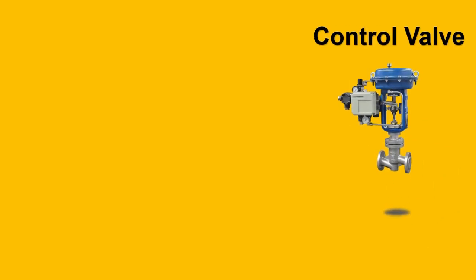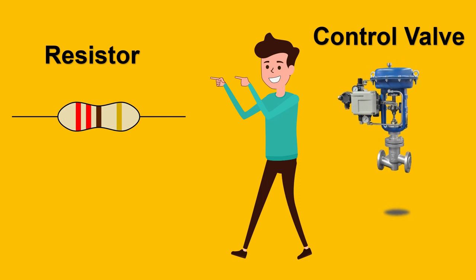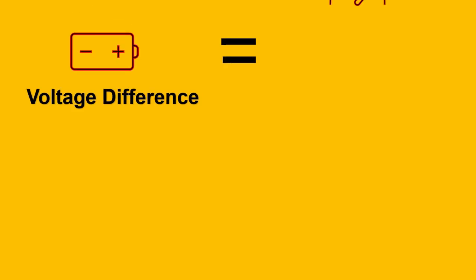Imagine that here's a control valve and a control valve's operation is very similar to a resistor. A control valve will resist the flow, a resistor will resist the current and the voltage difference is very similar to pressure difference. Let's take an example.